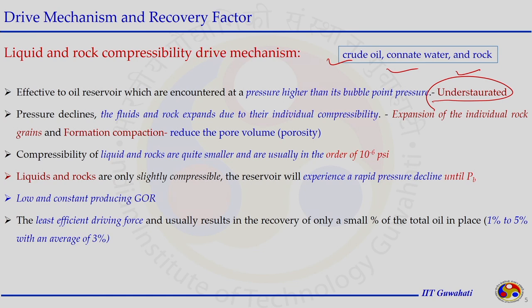When there is no gas initially present and pressure stays above the bubble point, the gas is not liberated from the oil, and most of the time the reservoir is not producing any gas. As production starts, pressure declines, and both the rock — which was under very high pressure — and the liquid begin to expand. Because of this expansion, they reduce the pore volume generated by production, pushing oil stored in microporous regions out, contributing to oil production.